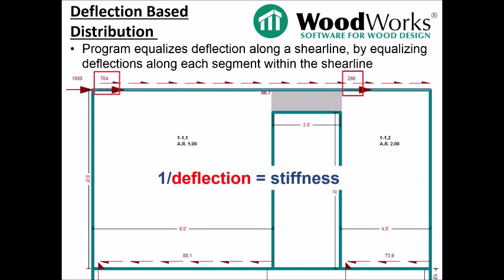Deflection-based distribution. What I'm discussing in the next two slides is what occurs along a shear line once a factored load has been distributed to a shear line. When using deflection-based distribution, the program equalizes deflections along a shear line by equalizing deflections along each segment within the shear line. Once deflections are equalized, deflection is used to approximate the stiffness of the segments, which is then used to distribute the loads to the segments. This is an iterative process which the software does automatically.